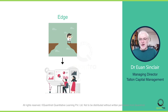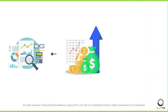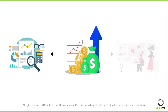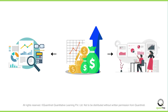In volatility trading, positions are taken based on expectations of changes in the underlying asset's volatility. Therefore, for this style of trading, you need to be able to estimate option prices and forecast volatility. And in this course, that's what we'll teach you.